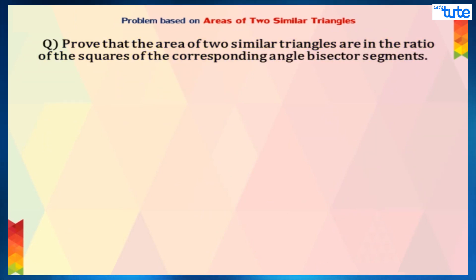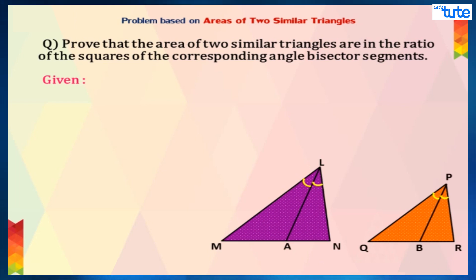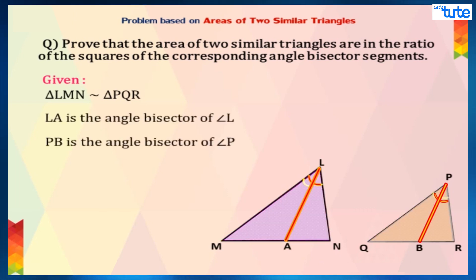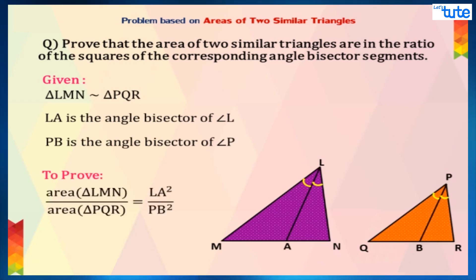We'll consider the two similar triangles to be triangle LMN and triangle PQR. LA is the angle bisector of angle L and PB is the angle bisector of angle P. We have to prove that the area of triangle LMN upon the area of triangle PQR is equal to LA square upon PB square.